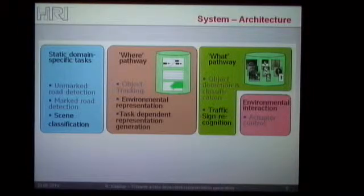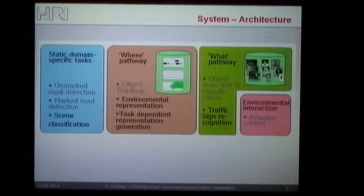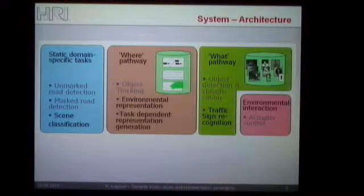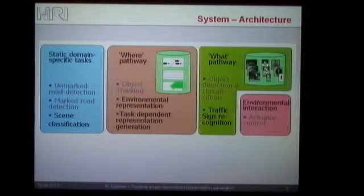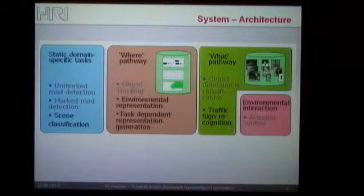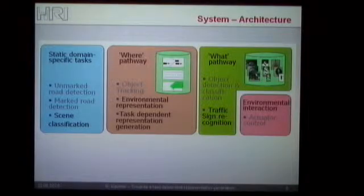Then we have the third large building block, which we call the WHAT pathway. These are bound to specific object classes. Here we have a generic front end of our driver assistance system, which is some kind of attention system, and we have a generic classification algorithm, but also some specific algorithms for traffic sign recognition. The final part is the environmental interaction, which incorporates everything bound to the actuator control or the output. For reasons of time I will not go into detail here, but you will see some results later which show a visualization of the internal processing.